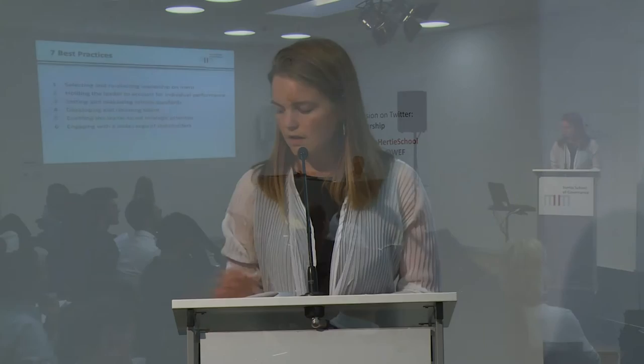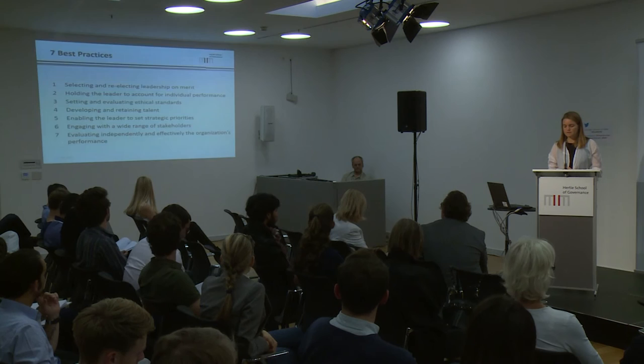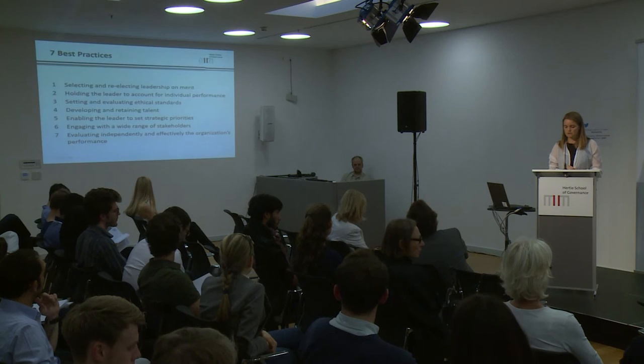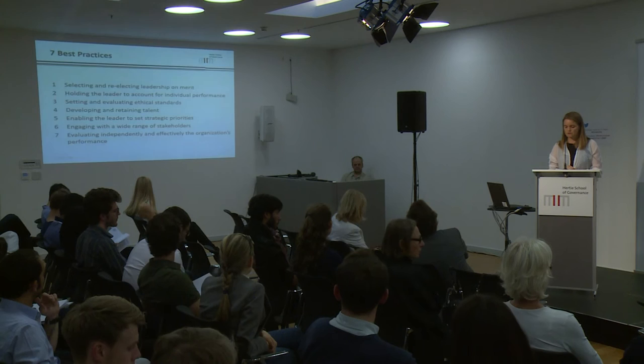Sixth, we looked at whether the heads of international organisations are engaging with a wide range of stakeholders, and whether there are regular institutionalised forums for civil society and NGOs to engage. UNHCR, for instance, consults with NGOs on a regular basis. Finally, the seventh best practice is how these organisations evaluate their own effectiveness and performance — specifically whether they have an independent evaluation office that reports directly to the board. The IMF and the World Bank both have independent evaluation offices, as does UNDP, and all of their evaluations include a separate management response prepared independently.